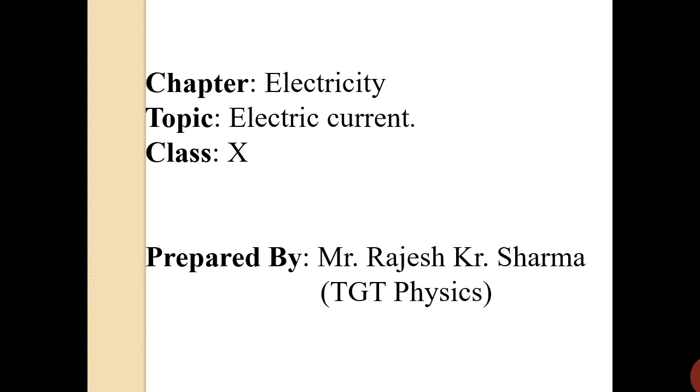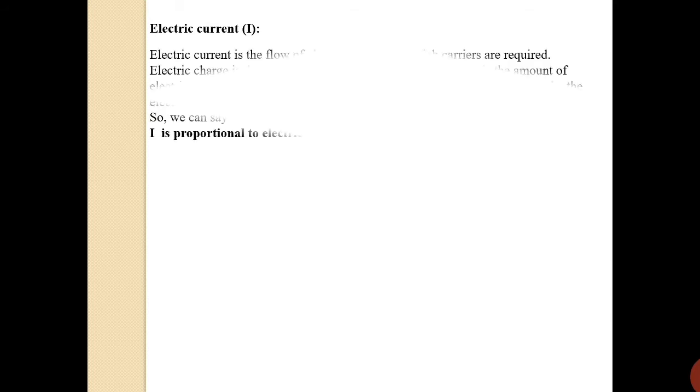The chapter we have is Electricity and the topic we are going to discuss today is electric current. We are writing capital I for electric current — that is just the symbol for the current, so don't be confused. I is not the SI unit of the current. The electric current is the flow of electric charge, for which carriers are required. Electric charge is the carrier of electric energy, and hence more is the amount of electric charge, more will be the flow of electric energy, and hence more will be the electric current.